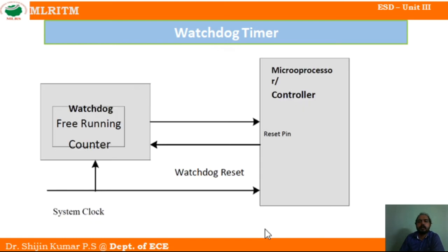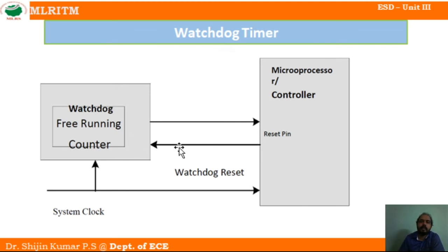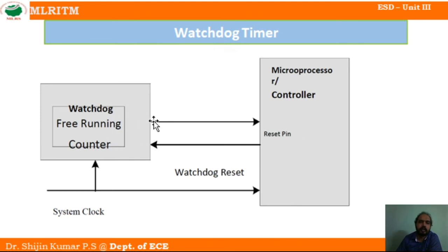This is the circuit for the watchdog timer. Here we have the microprocessor or microcontroller with its reset pin. It will always track the execution of the instruction, and we are providing the system clock — from the system clock the watchdog timer is also running. If the counting stops before completing the execution of a particular program, the watchdog timer will give a signal to the reset pin, it will be activated, and the system will again start from the beginning.